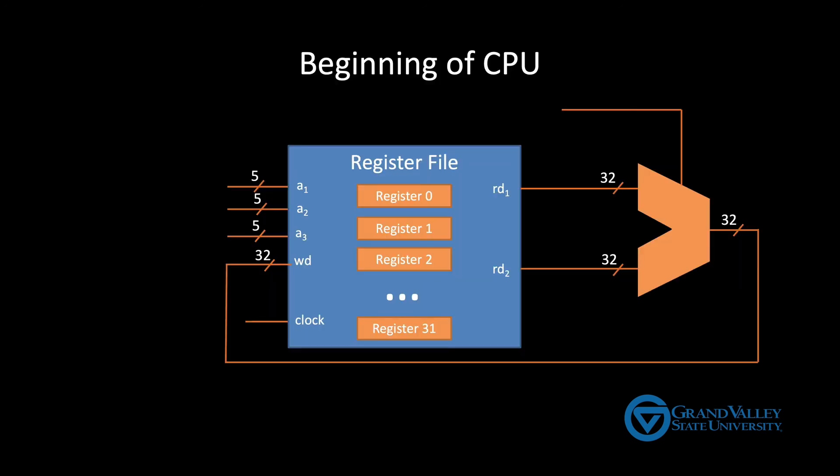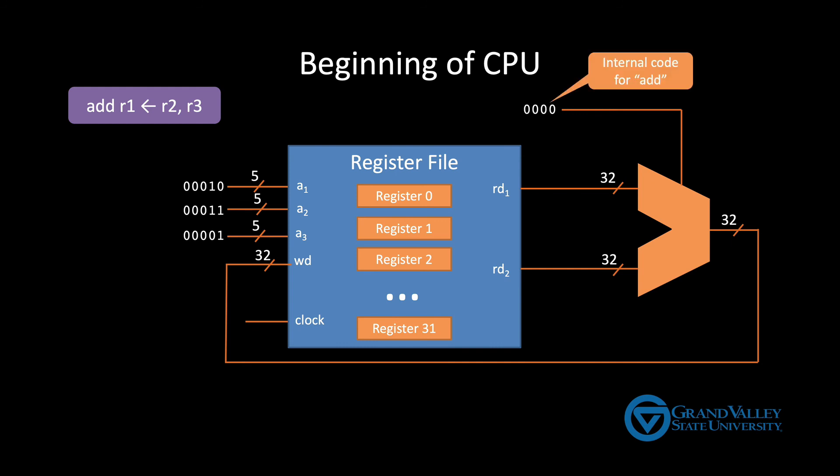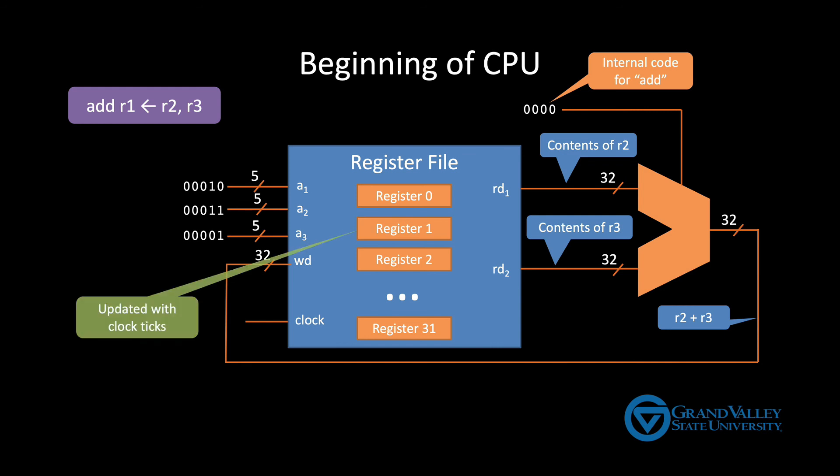So now we have all the details of the first two pieces of a general-purpose CPU: the register file and the ALU. When we want to perform an instruction like adding the contents of two registers, we place the numbers of the two source registers on A1 and A2, place the number of the destination register on A3, and place the opcode for, in this case addition, on the ALU selector. The register file will put the contents of R2 and R3 onto RD1 and RD2. Then the ALU will perform the addition. And when the clock next ticks, register 1 will be enabled for writing and will be updated with the result of the addition.